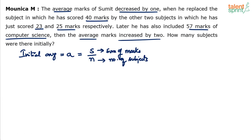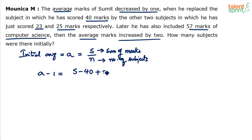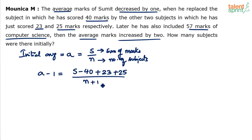The average decreased by 1, meaning it became A minus 1, when 40 marks of one subject were removed and 23 and 25 marks of two other subjects were included. From the sum, subtract 40 since that subject was removed, and add 23 and 25. One subject is removed and two subjects are added, so the number of subjects becomes N plus 1, that is N minus 1 plus 2.